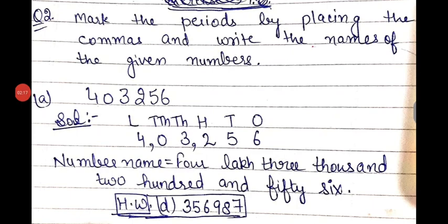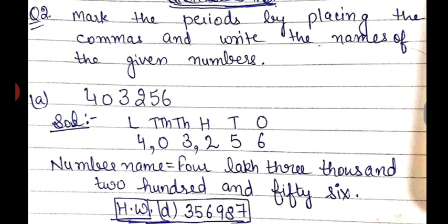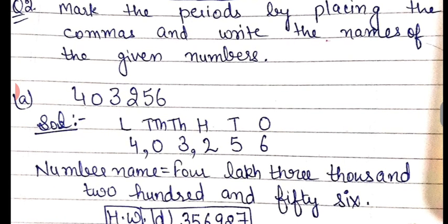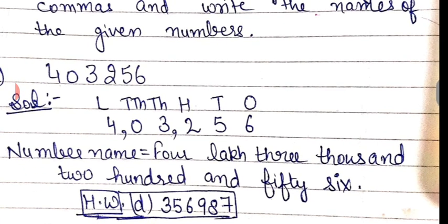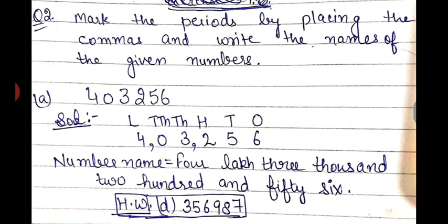Question number 2: mark the period by placing the commas and write the name of the given number. First step is to put the places: ones, tens, hundreds, thousands, ten thousands, and lakhs. Then we will fill in the number under those places. After every period we have to mark the comma — after the lakh period we will put a comma, after the thousands period we will put a comma. So the number name becomes 4 lakh 3256. The B part you will do yourself.